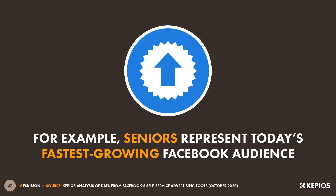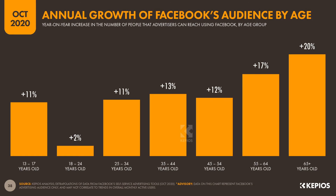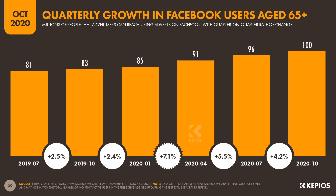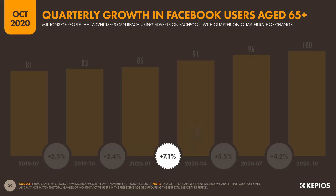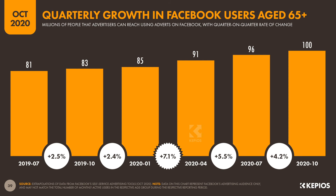One of the most interesting findings is that older age groups have seen some of the fastest growth in social media adoption over the past few months. For example, as we can see on this chart, people aged 65 and above represent Facebook's fastest growing audience at the moment, and user numbers in this age group have increased twice as quickly as the overall average over the past 12 months. This next chart tracks quarterly growth in Facebook users aged 65 and above, and as you can see, growth accelerated significantly between January and April, when people started to adjust their behaviour due to the emerging coronavirus pandemic.